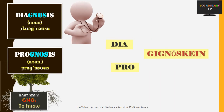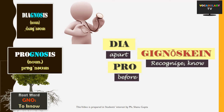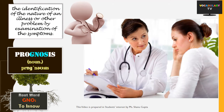Looking more at the root GNO, we have 'diagnosis' and 'prognosis' — a confusing pair, as both words are common in medical terminology. The key lies in their prefixes. 'Di' means 'apart', so diagnosis would literally mean knowing something apart. Diagnosis refers to the identification of the nature of an illness or other problem by examination of the symptoms.